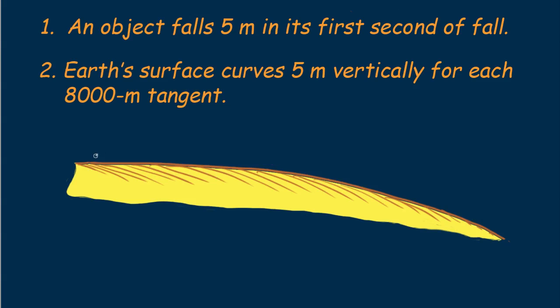Consider a portion of earth in a desert region where the land is flat and without obstructions. Let's mount a laser on a tripod about a meter above ground level and shine a laser beam horizontally out across the desert floor. Due to earth's curvature, the beam downrange would be higher above the ground than at its starting point. At 8 kilometers downrange, the beam would be 5 meters above its starting level.